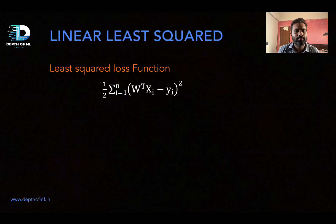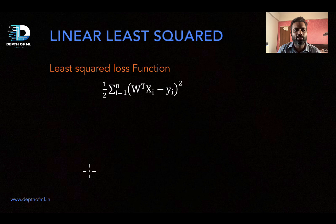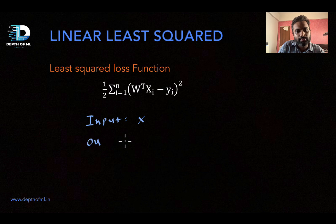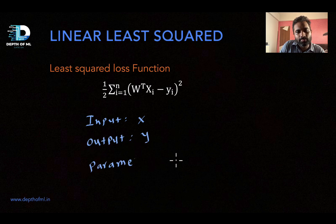Please remember, this was the least square loss function that we have defined for a linear regression problem. Let's revise what was input, outputs and parameters. Inputs were capital X, output is small y, and parameter is capital W.